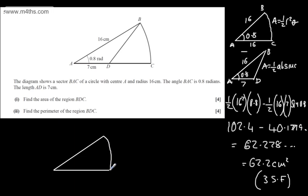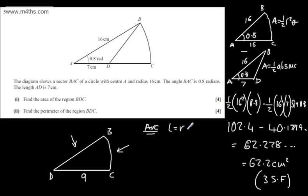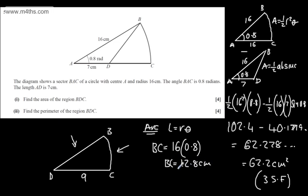Here's a quick sketch: we've got B, D, and C. We know that D to C is 9; what we want is D to B and B to C. For the arc length, L = Rθ, where R is the radius and θ is the angle in radians. So BC = 16 × 0.8 = 12.8 centimetres. So the arc length BC is 12.8.